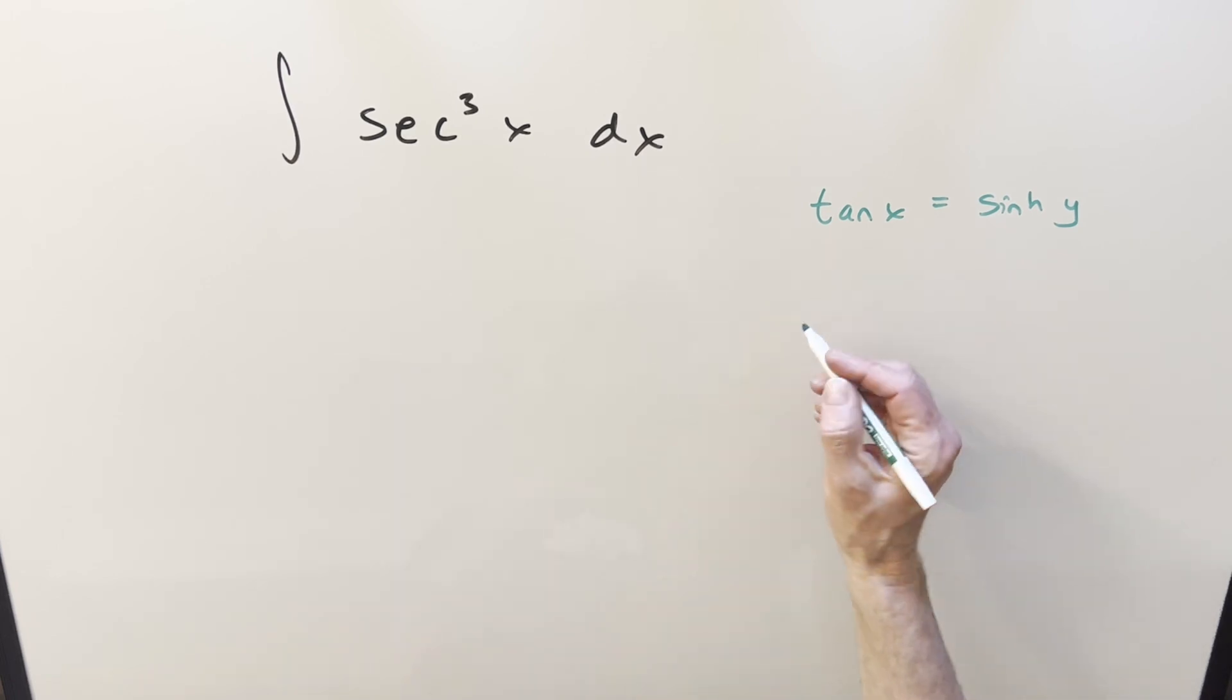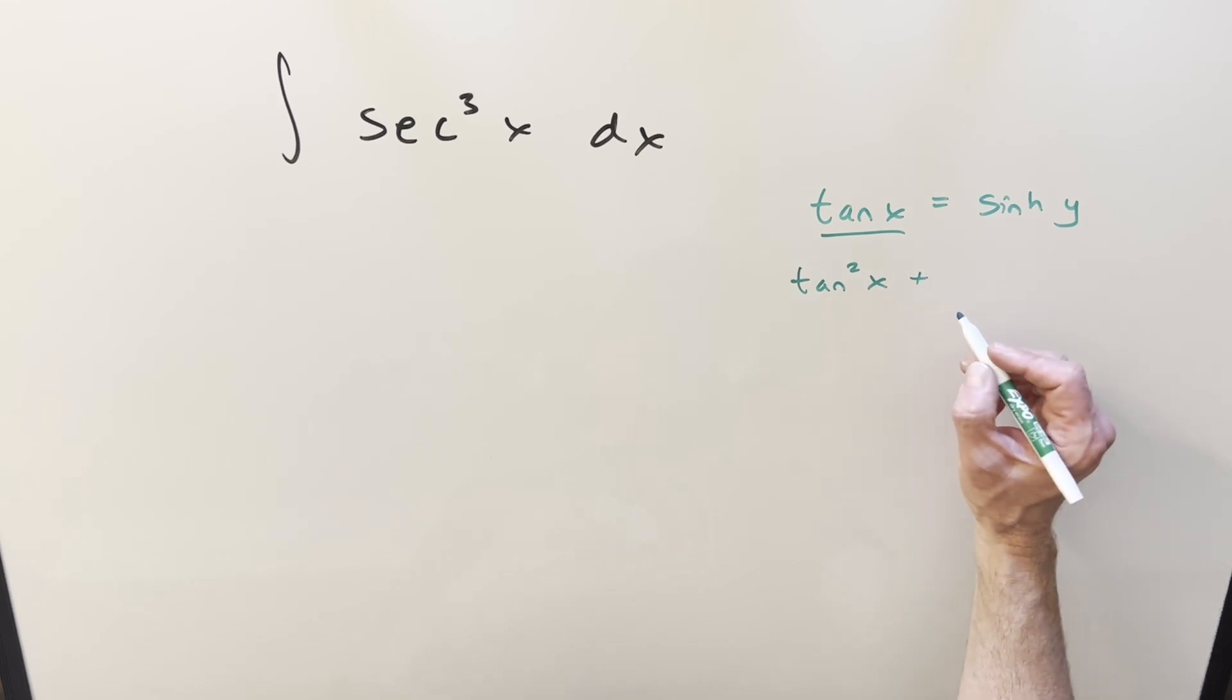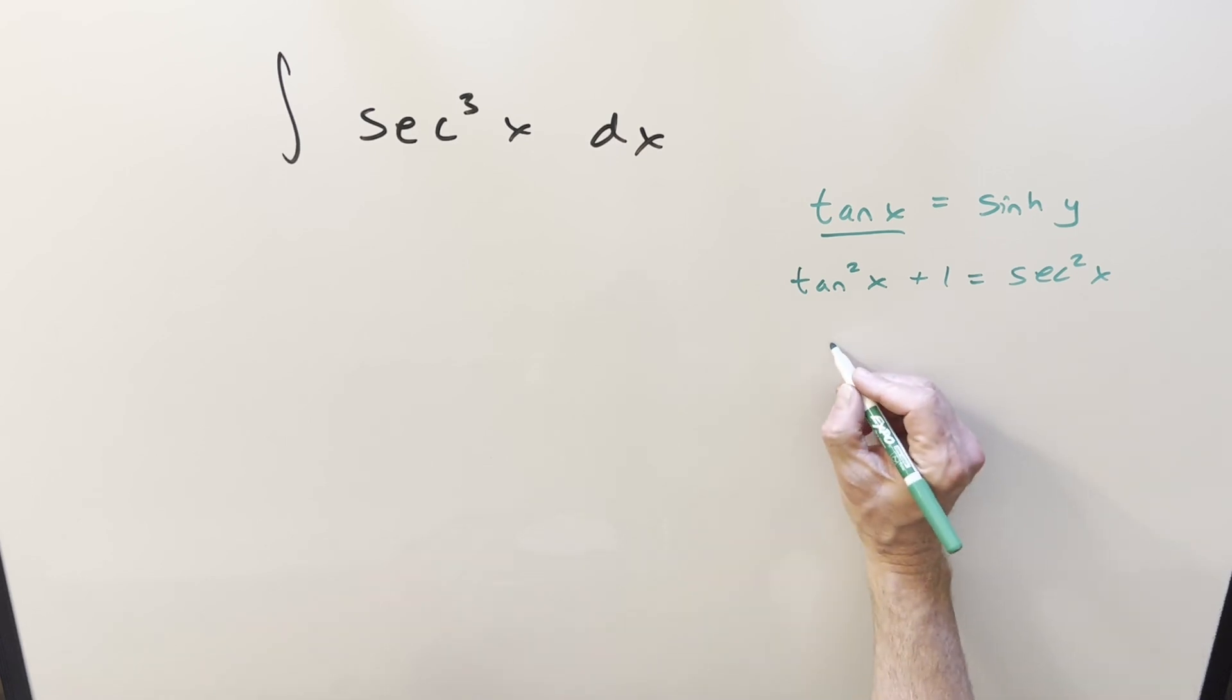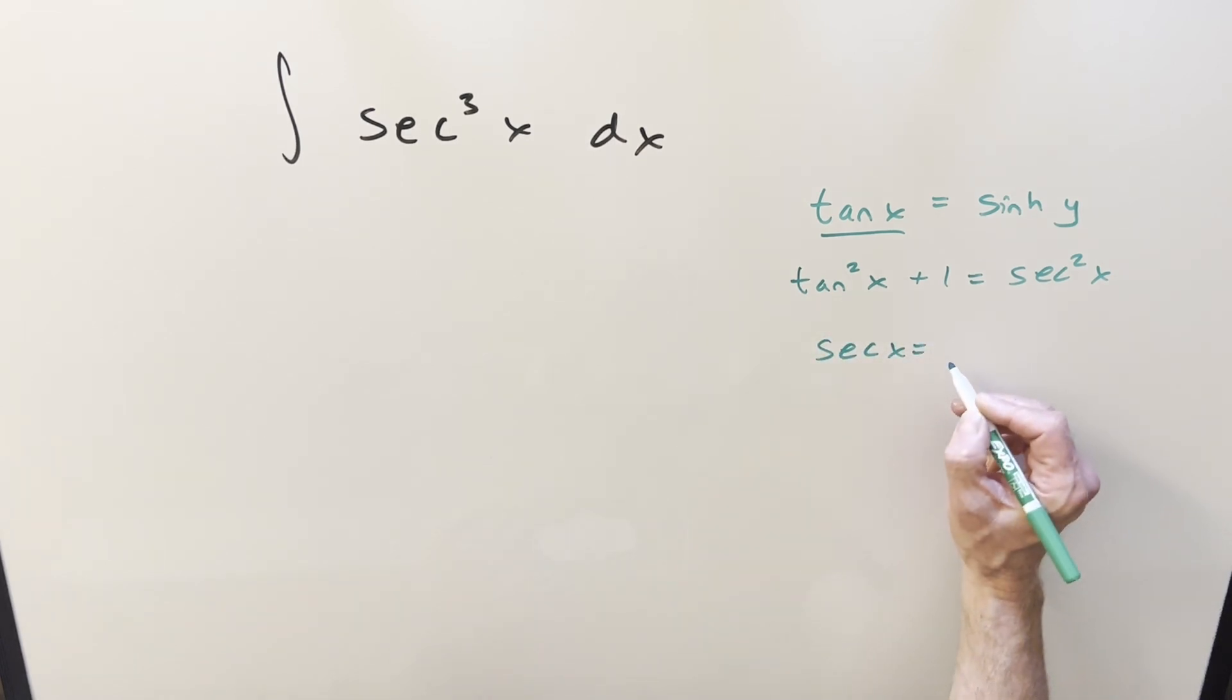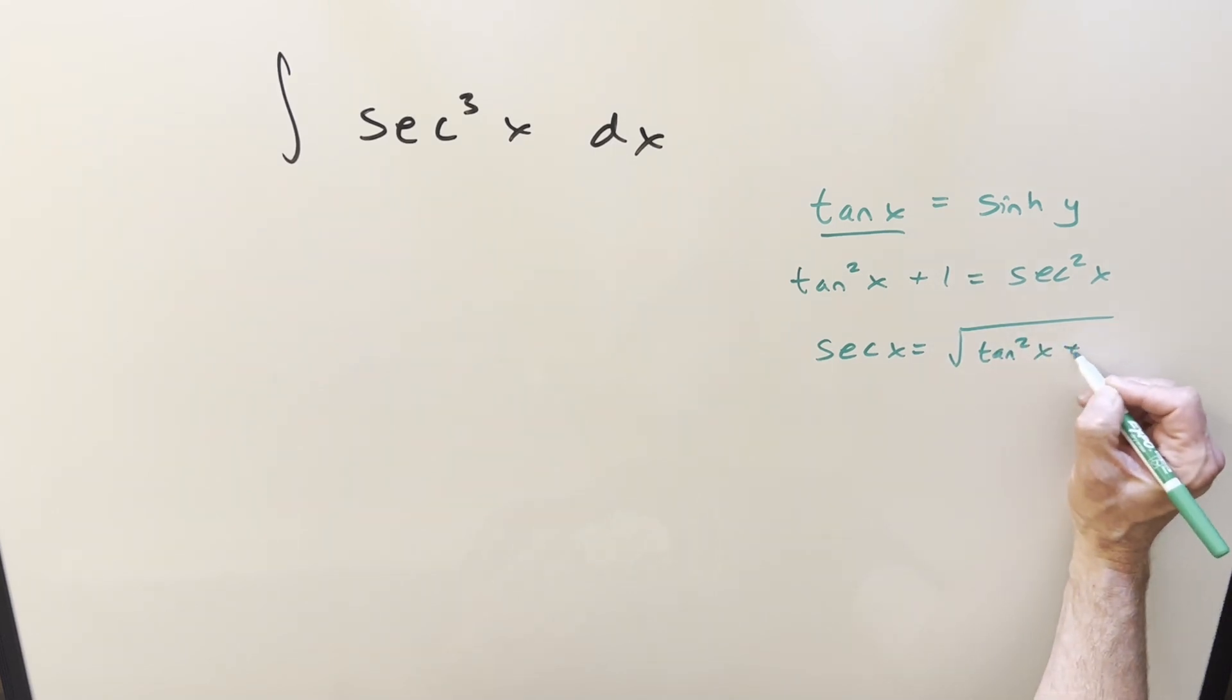So to start with, one thing we can do, we know we have this identity relating tangent to secant, because you might be wondering why are we substituting tangent when we have secant, but we have tan squared of x plus one is equal to secant squared x. And so if we just take a square root on both sides, we can get a value for secant, just the square root of tan squared x plus one.